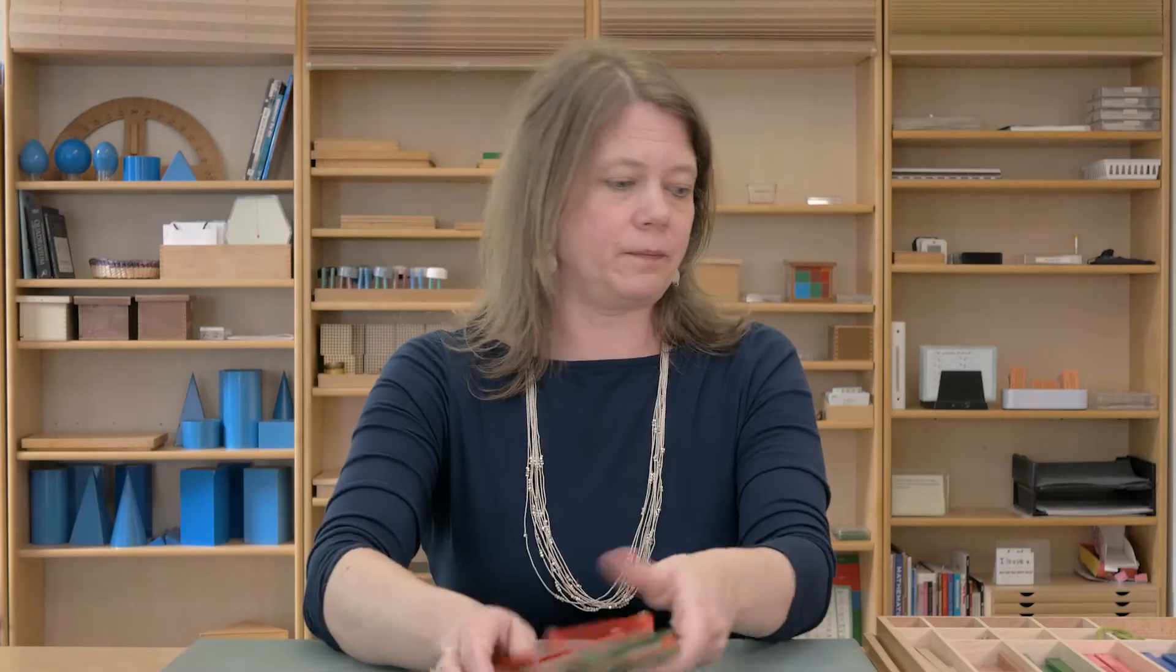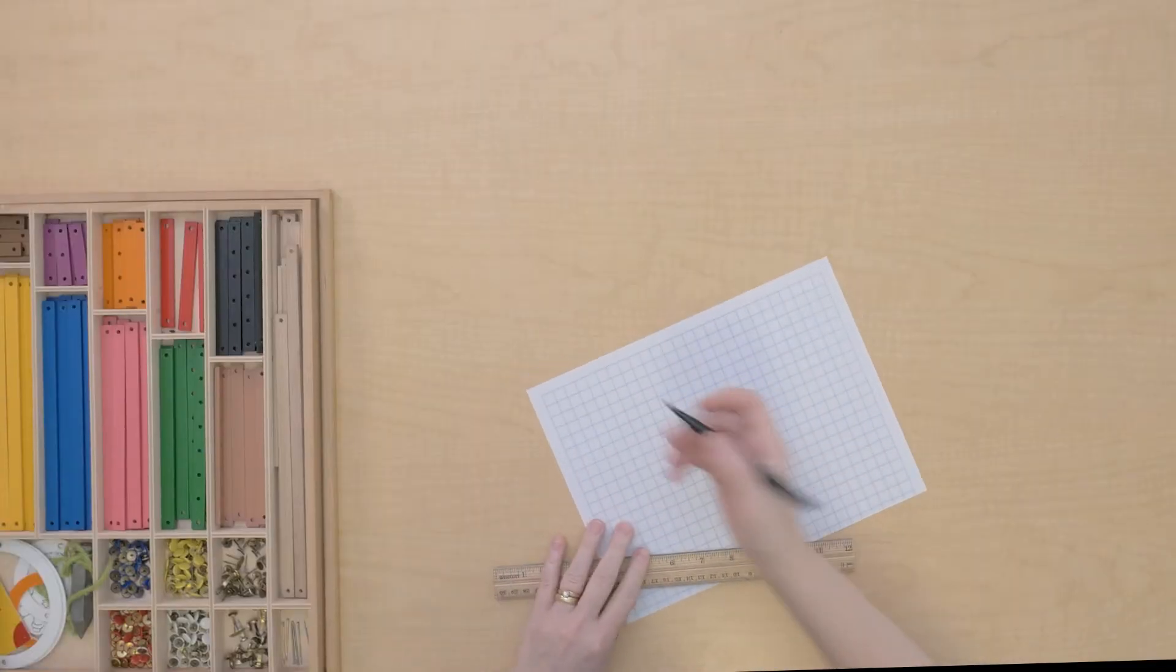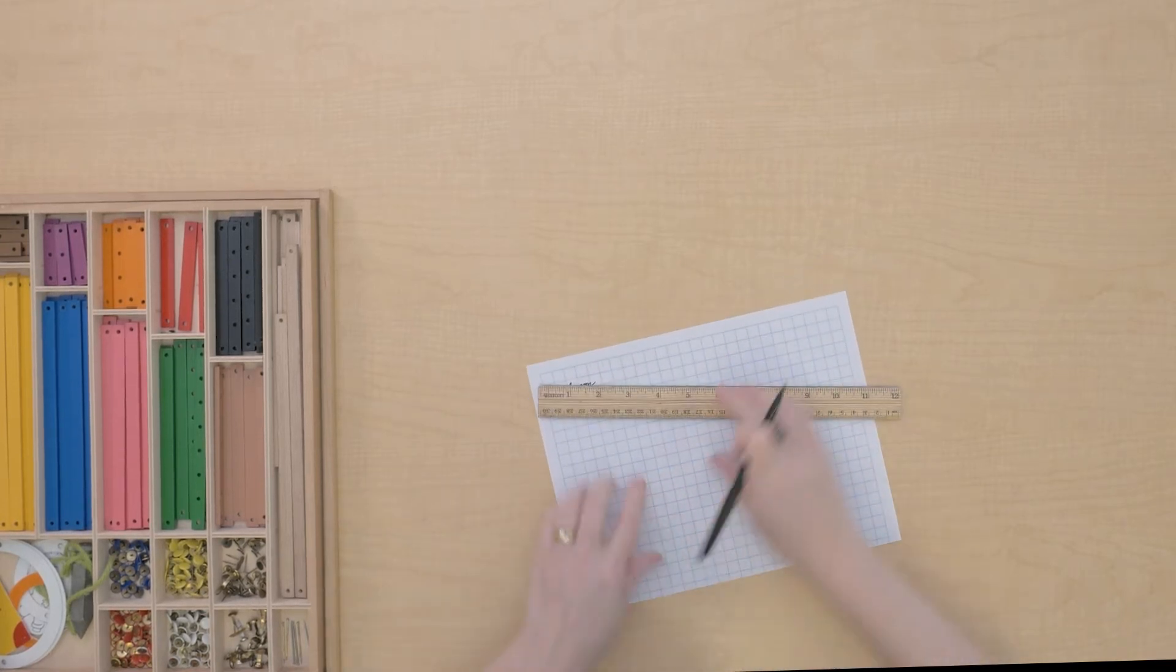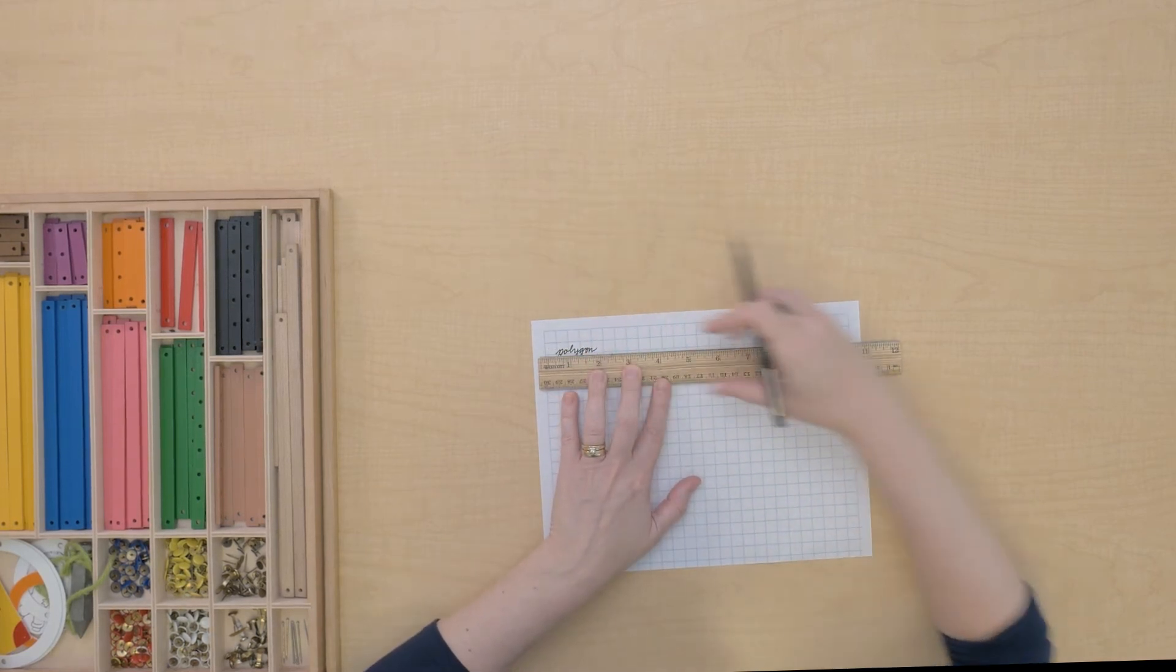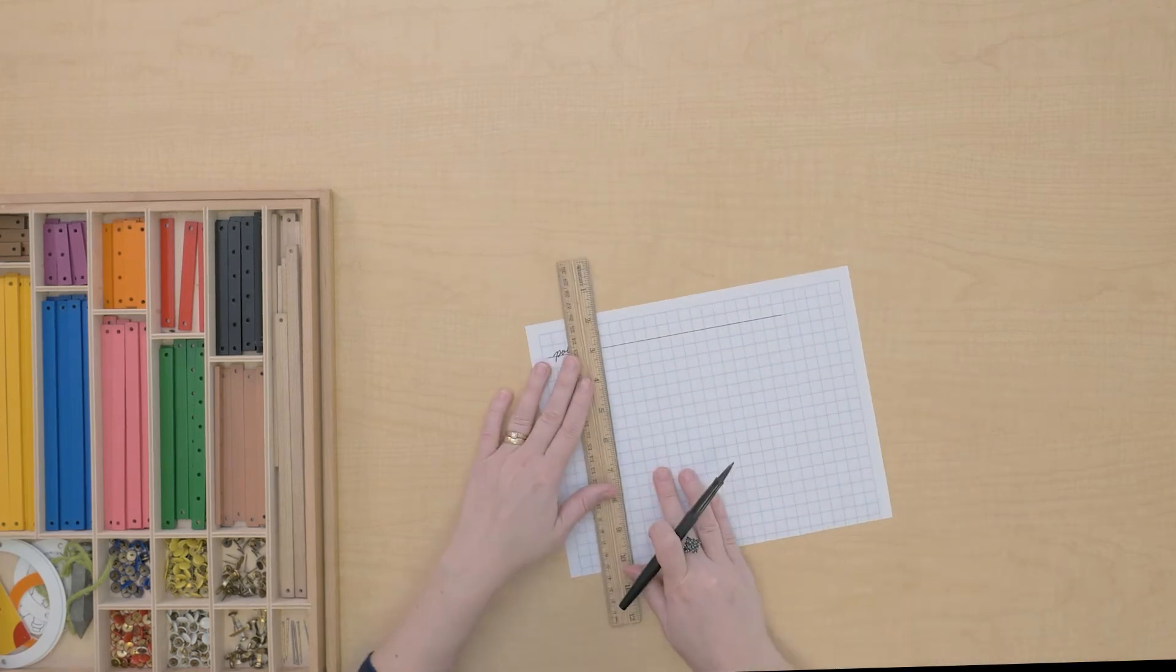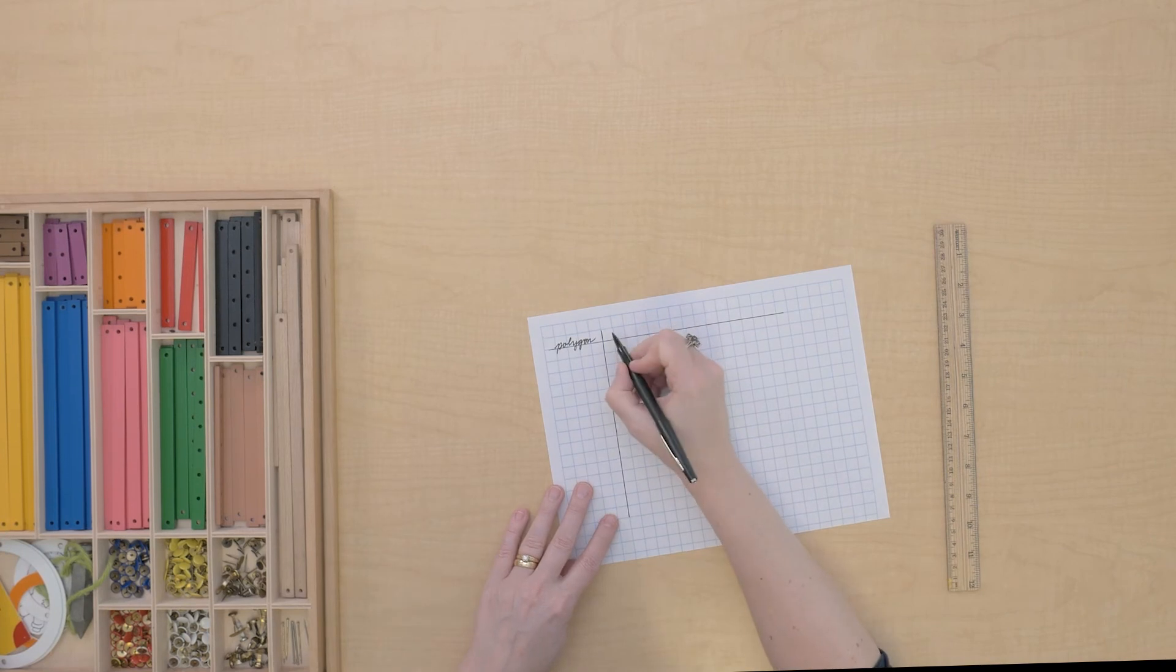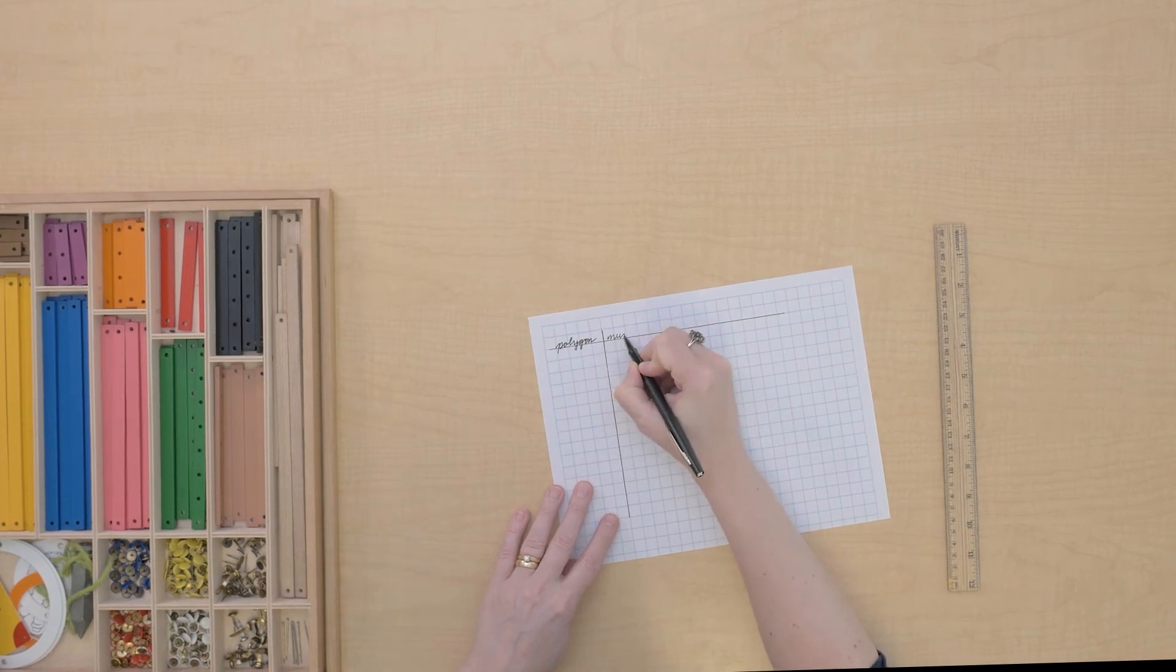Maybe we could make a table of all this information that you found. We can make a table with some columns. Let me show you how we can do that. Let's make a table for ourselves. We're going to have a column that is the name of the polygon. And then we're going to have a column that tells us the number of sides.